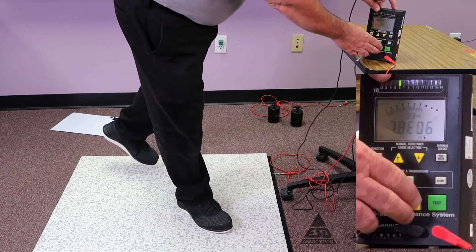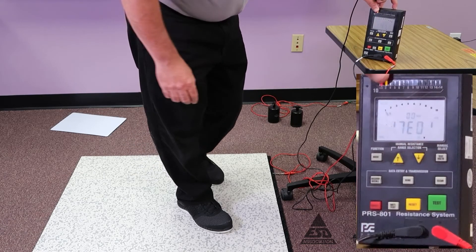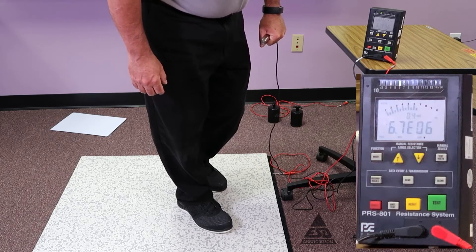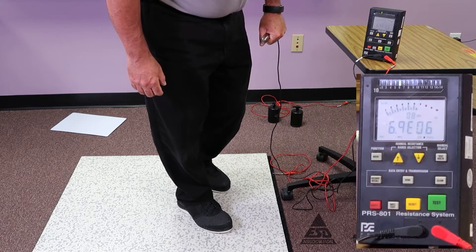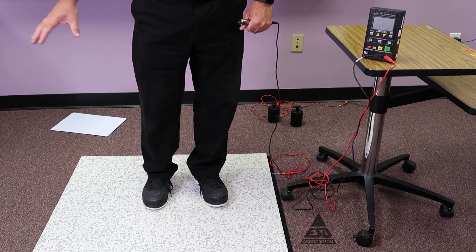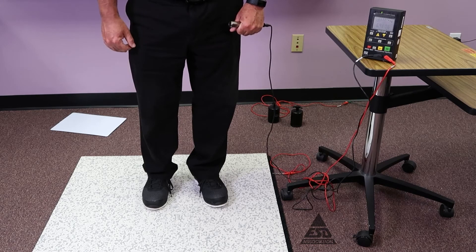And then I'll do my right one. And 10 to the 6th. You would repeat these measurements for at least three times in separate spots on the floor. In this case, I'm just doing one sample to show you how the measurements are made.